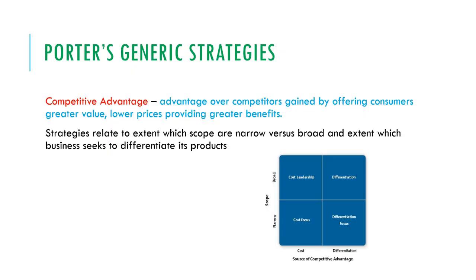Porter's Generic Strategies has a main theme of competitive advantage. It's basically all the different types of strategies you can use to gain a competitive advantage — an advantage over competitors gained by offering consumers greater value or lower prices and providing greater benefits. Strategies relate to whether the scope is narrow versus broad and the extent to which the business seeks to differentiate its products. From the diagram, the two axes are source of competitive advantage — cost and differentiation — and scope — narrow and broad.